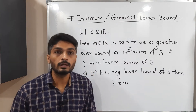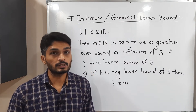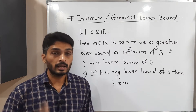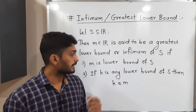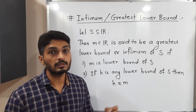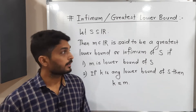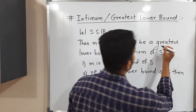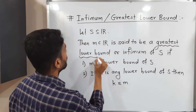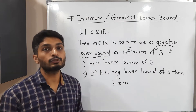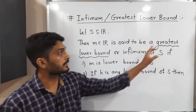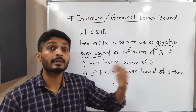The first condition is that m should be a lower bound of S. The second condition is that if there is any other lower bound of the same set S, then m should be greater than or equal to that lower bound. If you focus on the words 'greatest lower bound,' you can easily understand: it should be a lower bound, and second, it should be the largest lower bound.